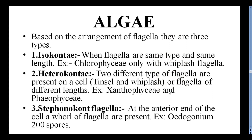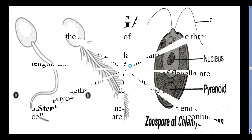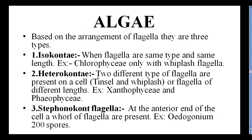This diagram shows Whiplash flagella with a smooth surface and Tinsel flagella with flimmer filaments. This is a zoospore of Chlamydomonas, showing a Nucleus, Eye-spot or Stigma, two Flagella, and a Pyrenoid. Based on the arrangement of flagella, algae are divided into three types. Isoconte: flagella are of the same type and same length, as in Chlorophyceae with only Whiplash flagella — seen in Chlamydomonas. Heteroconte: two different types of flagella are present — one Tinsel type and one Whiplash type, or flagella of different lengths. Seen in Xanthophyceae and Phaeophyceae. Stephanoconte: a whorl of flagella is present at the anterior end — example: Oedogonium zoospores.